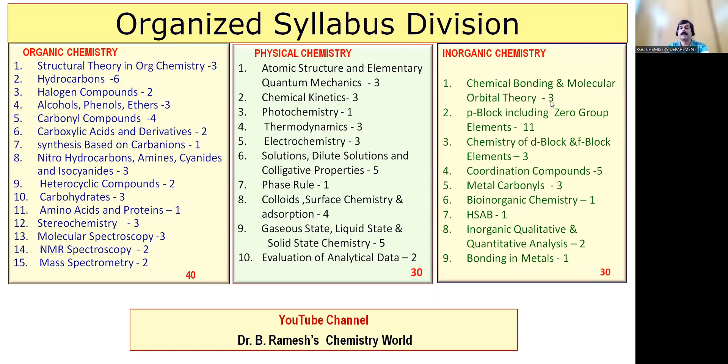Inorganic chemistry is concerned, 3 marks for chemical bonding. P-block including zero group, 11. D and F-block, 3. Coordination compounds, 5. Metal carbonyls, 3. Bio-inorganic, 1. HSAB, 1. Quantitative and qualitative analysis, 2. Bonding in metals, 1.